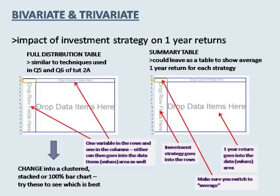You will need to include three subsections as outlined in the task sheet and in the first workshop recording. For each of these subsections, we will still need to follow the report writing conventions, and so a good template is: intro sentence, chart or table, features, and then interpretation and analysis.